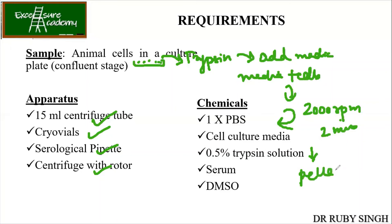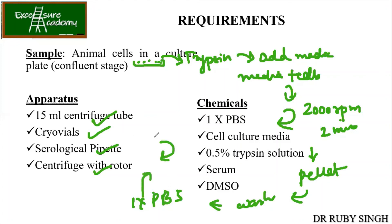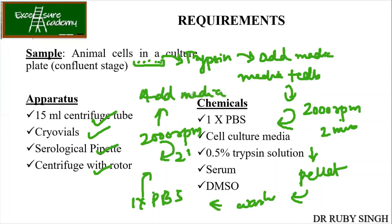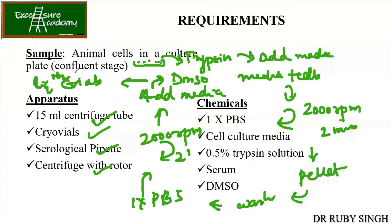The cells will come into a pellet. Take this pellet and wash it — add 1X PBS (phosphate buffer saline), wash it, then again centrifuge at 2000 rpm for two minutes. Then add media, then add DMSO. After this addition, put into cryovials, and then proceed to liquid nitrogen — but through the steps: first ice, then minus 20, then minus 80, and then liquid nitrogen. This is how you carry out your entire procedure of preservation.